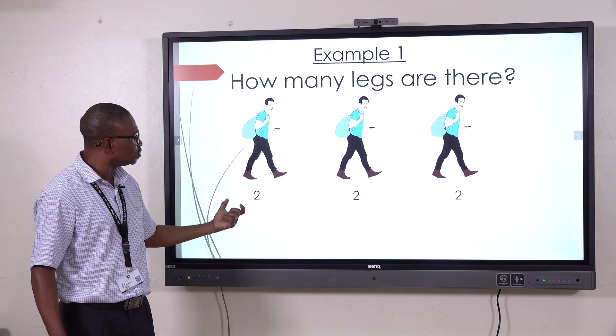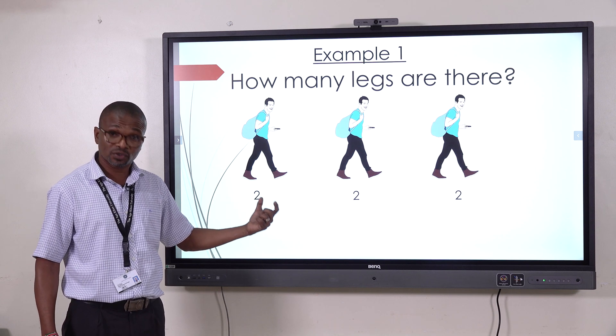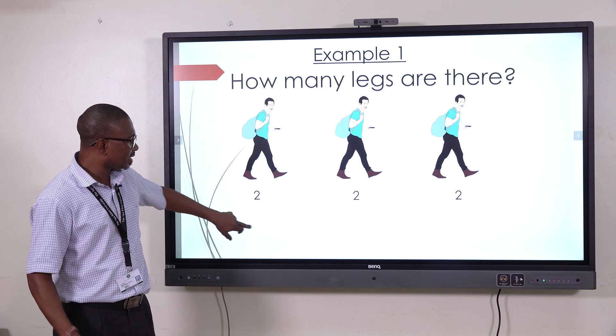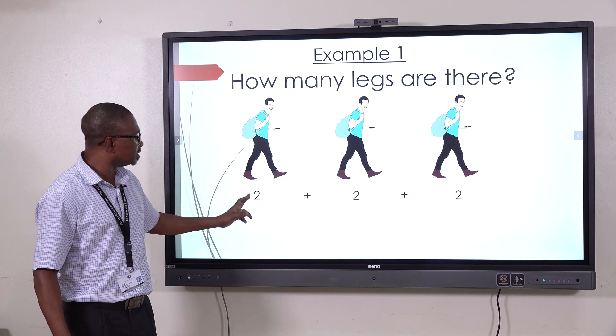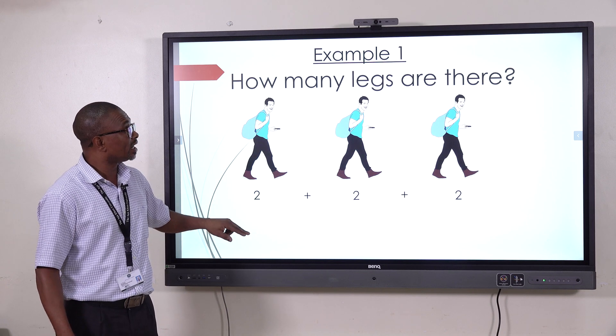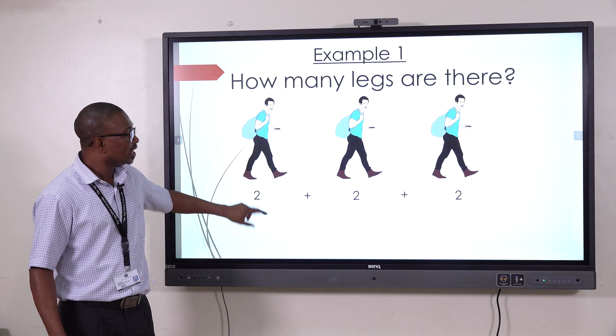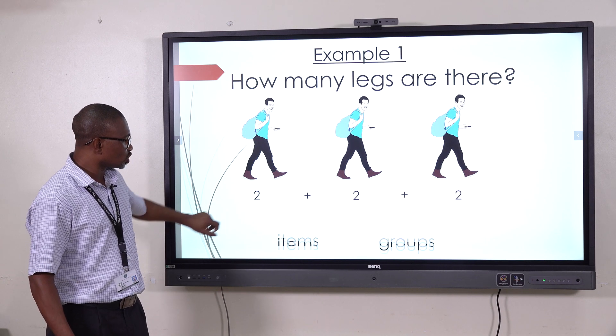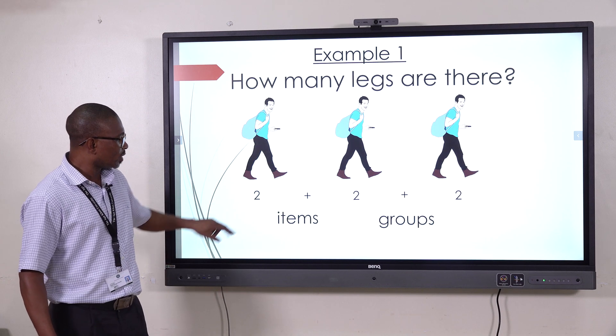So, in so saying, then we see there are two legs in each group. Two legs per person. Way back, we are used to saying now it is two, add to two legs, add to two legs. But now, because we are doing multiplication, we are talking about groups and number of items in the groups. So, we have items and the groups. How many items are there?